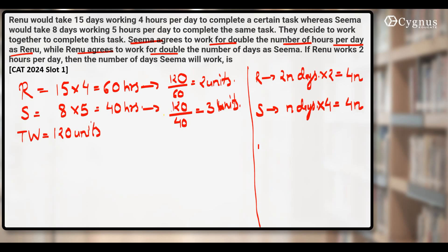Let's see how much work Renu and Seema do. Renu in 4n hours can do 4n times 2 units, which is 8n. The contribution of Seema would be 4n times 3 units, which is 12n. Together that makes 20n.